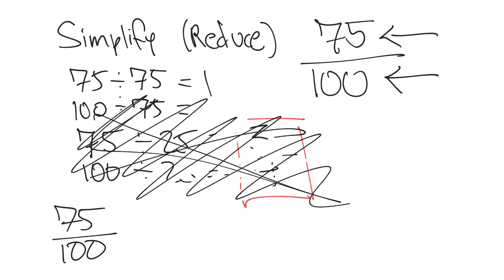Well, we know that anything with a 5 or a 0 in the ones place is going to be divisible by 5. So what is 75 divided by 5? A quick calculation shows us that it equals 15. And 100 divided by 5 equals 20. So now we have something partially reduced, but not all the way reduced.